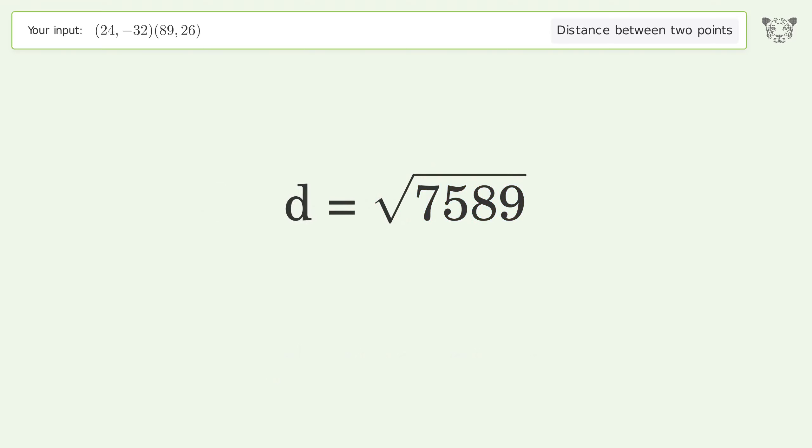And so the distance between the two points is the square root of 7589 or 87.115.